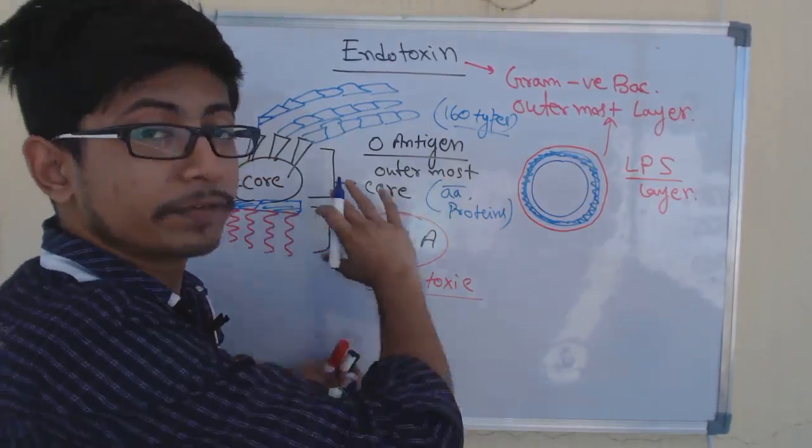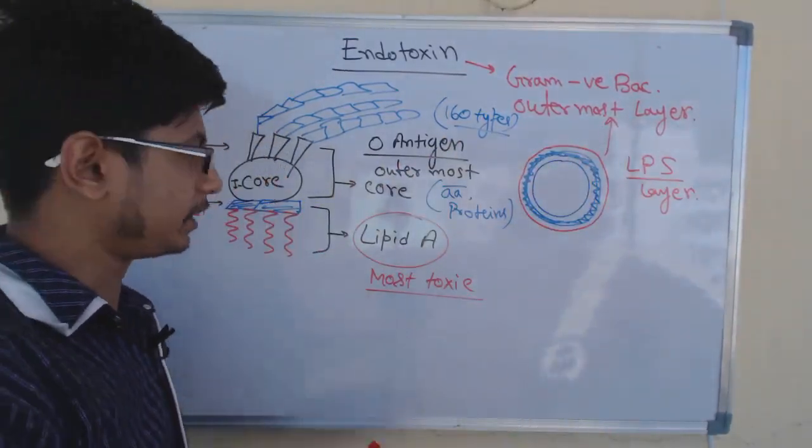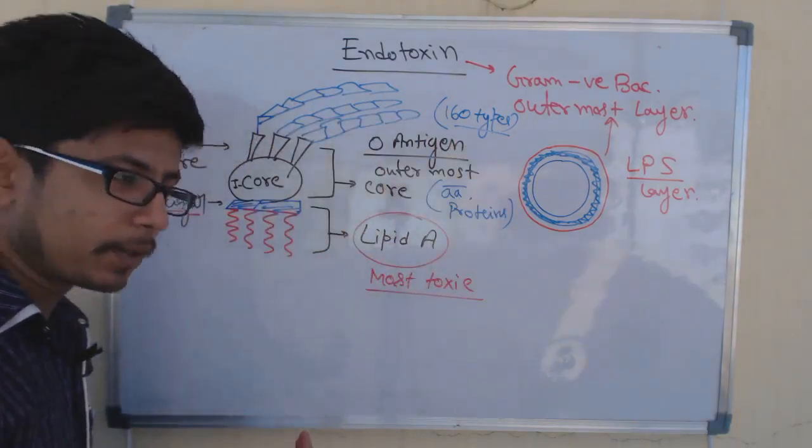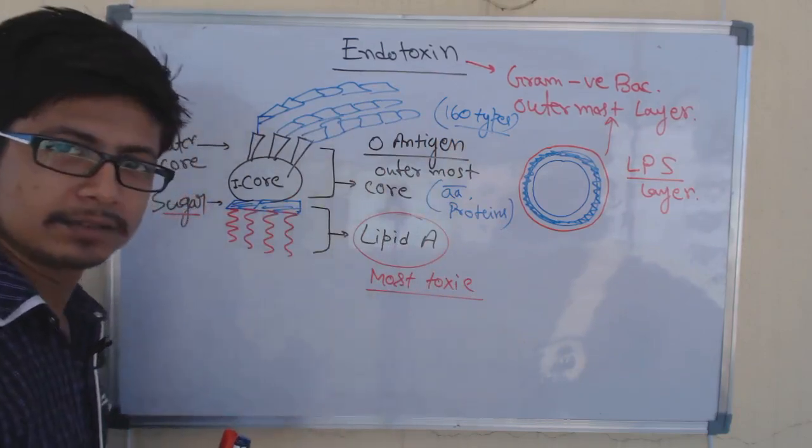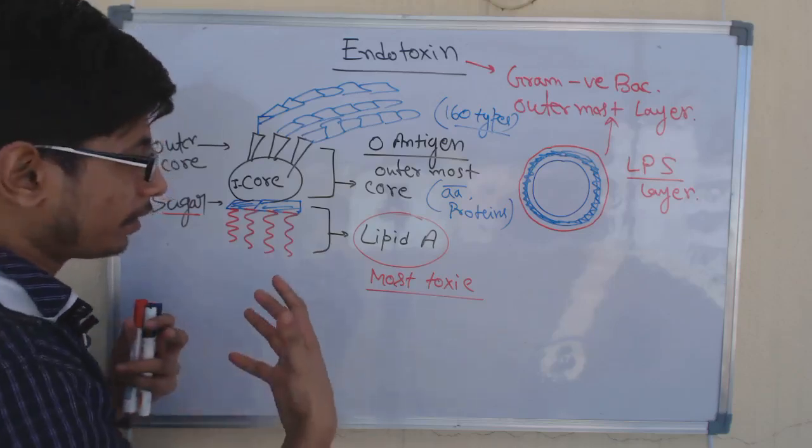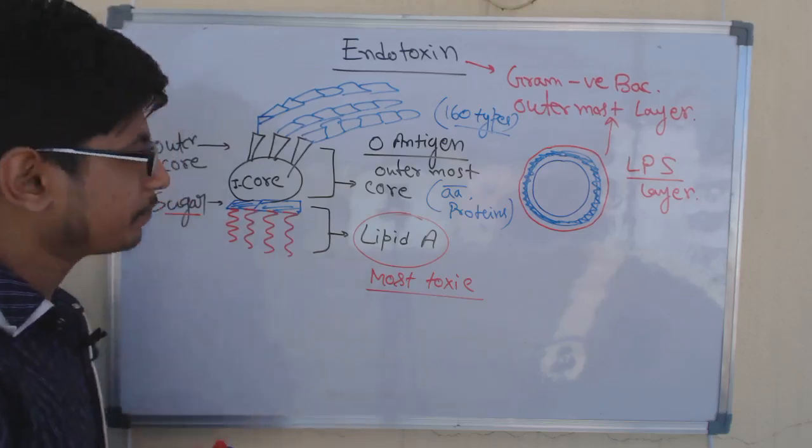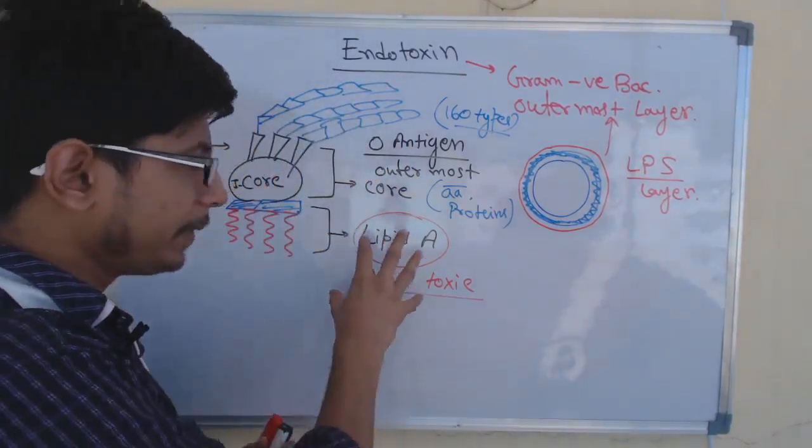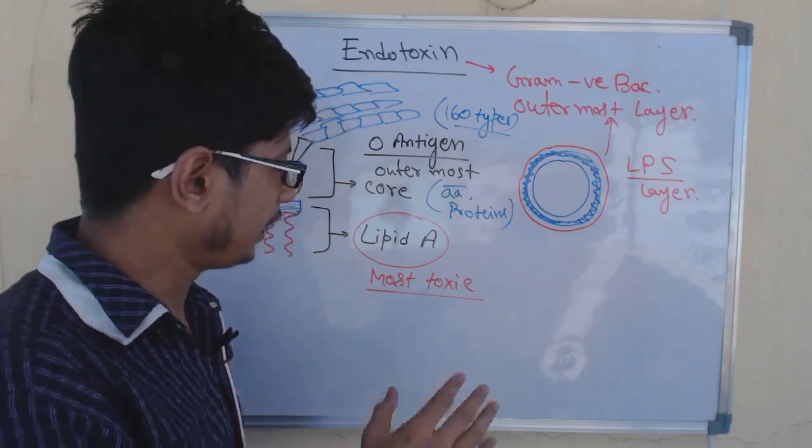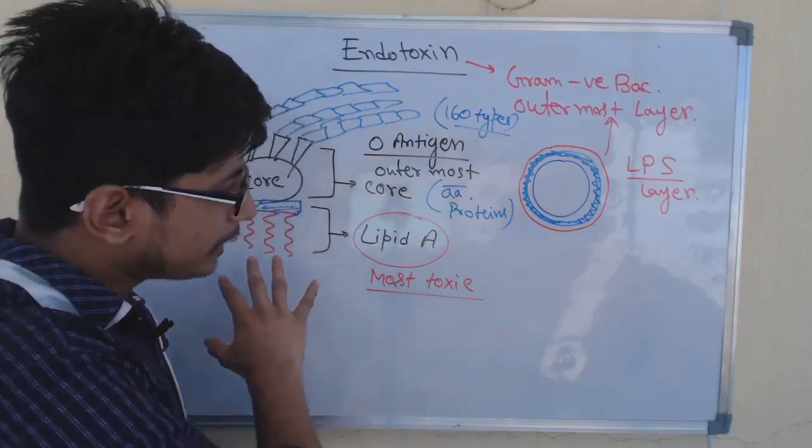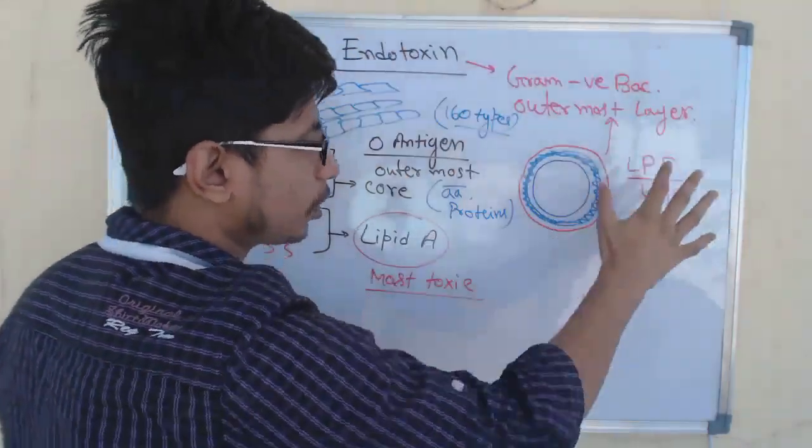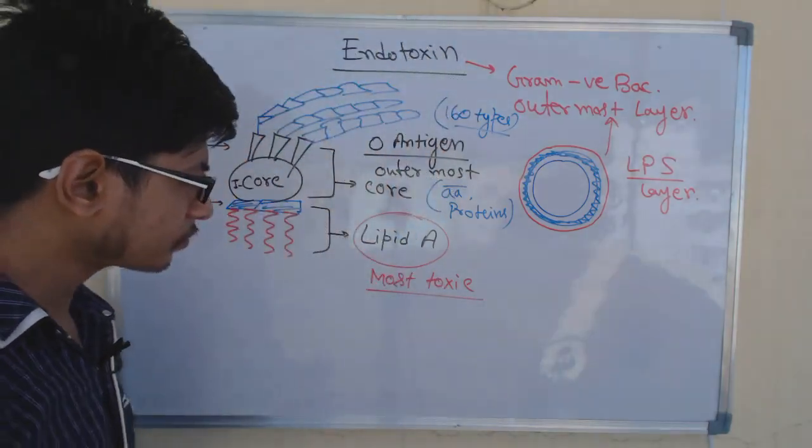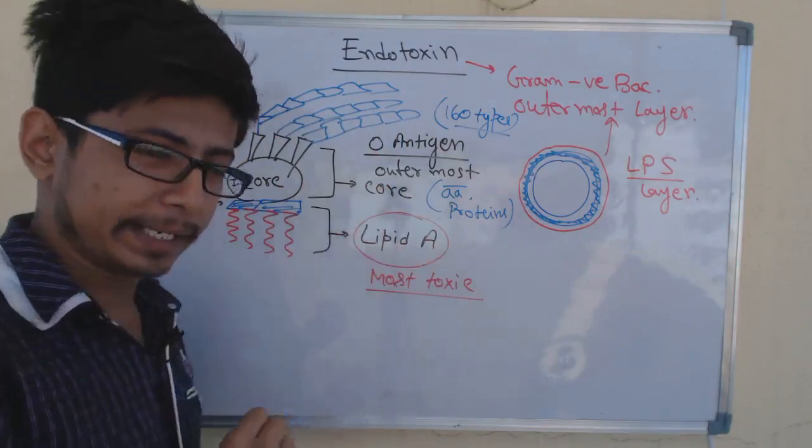If lipid A is exposed in our body, our body vigorously tries to desperately get an immune response against it. O antigen and core all of them have immunogenic response capability, but lipid A contains the most of this part and lipid A is most toxic. All the other problems that endotoxin generally causes, like septic shock—the shock syndrome that they cause—most of them is due to this lipid A.